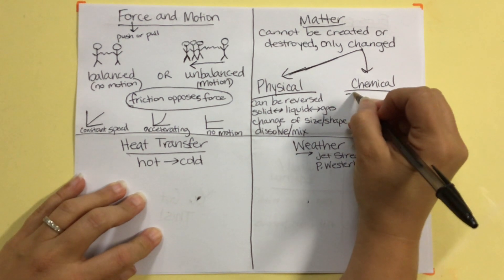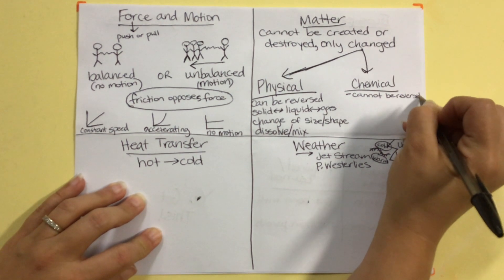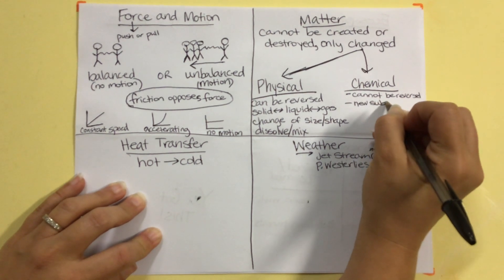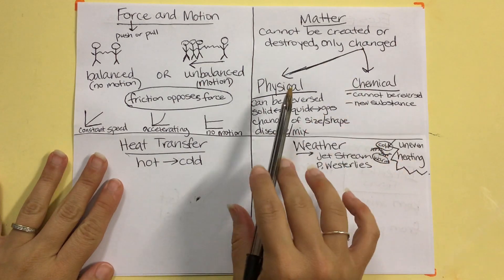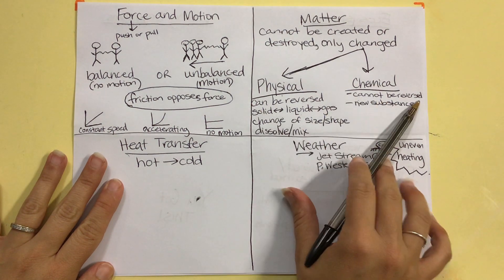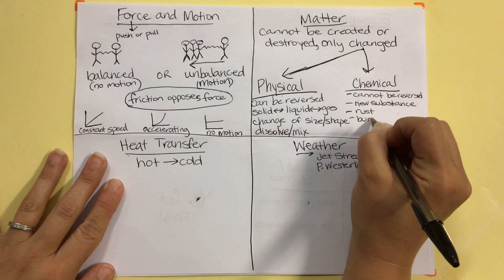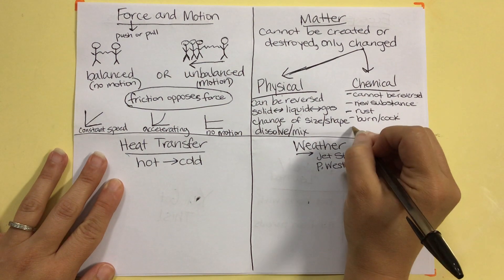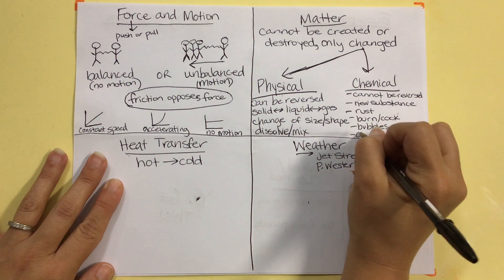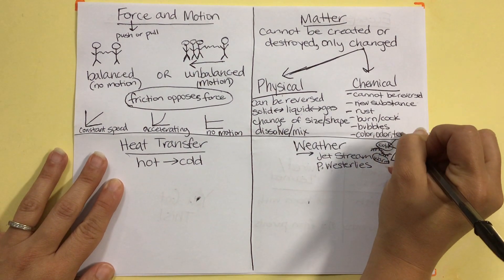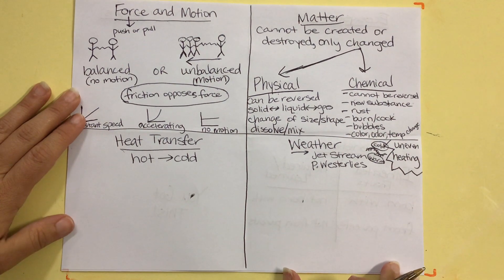However, with a chemical change, chemical changes cannot be reversed. And that is because a new substance is formed. That is a key term. If you don't write anything else on your brain dump, and you've got to write matter, you want to know that physical changes can be reversed, solid, liquid, gas. Chemical changes cannot be reversed, and a new substance is created. But, some examples of those would be rusting, burning, cooking. If something produces gas bubbles. Or a color, odor, or temperature change. Alright, that's matter.